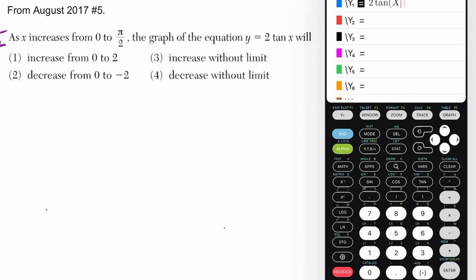Okay, so we're told that there is an x value, and it's increasing from 0 to π over 2, and we want to know what's going to happen to this graph right here. So what we'll first do is quickly analyze on the graphing calculator, and then show how you can actually quickly answer this without the graphing calculator.